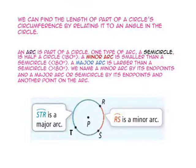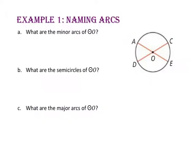This is a semicircle, arc RST. In example A, we will name arcs. For part A, we want to name the minor arcs of circle O. For part B, we want to name the semicircles of circle O. And for part C, we want to name the major arcs of circle O.